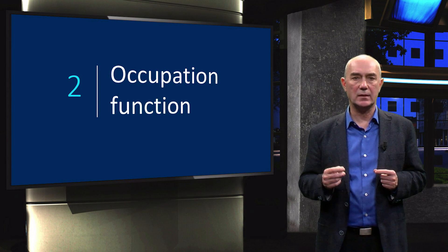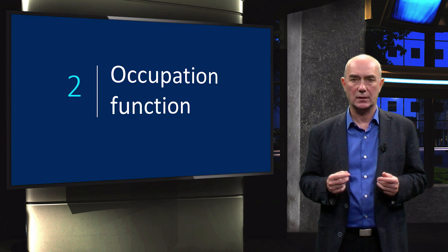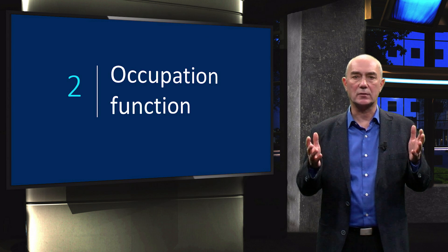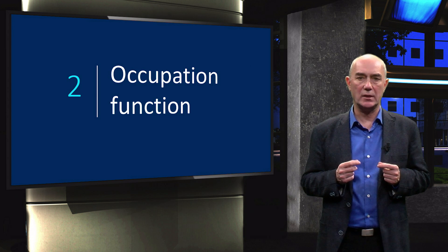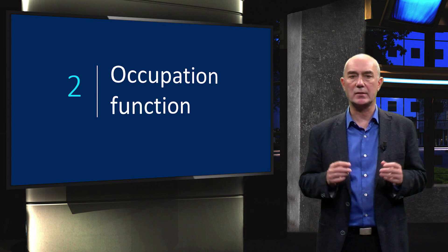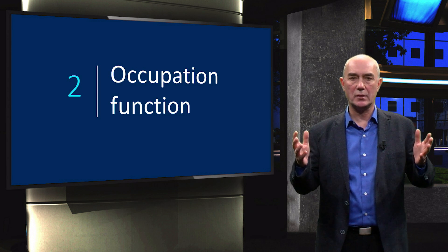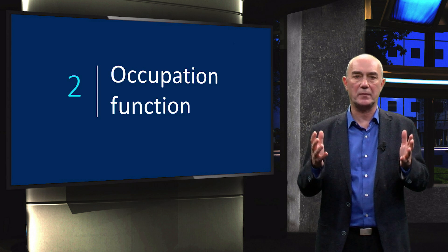So now we know the density of allowed energy states of mobile electrons and holes. In order to calculate the total charge carrier concentrations, we also need to know how many of energy states are really occupied. For this purpose we introduce what is called the occupation function.